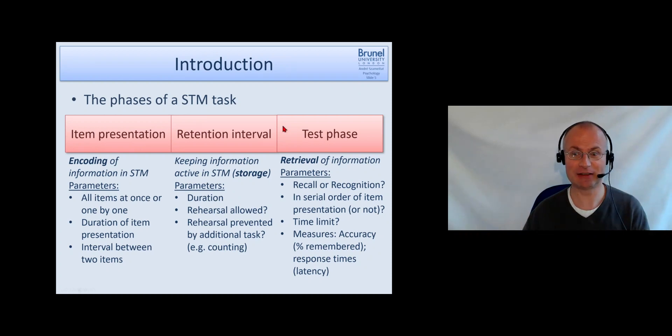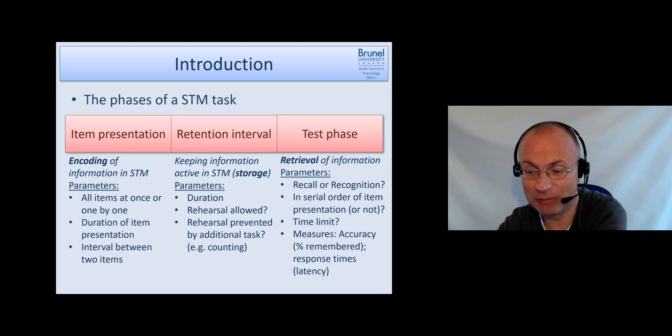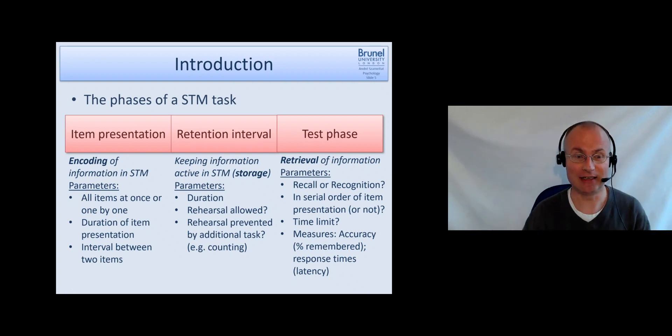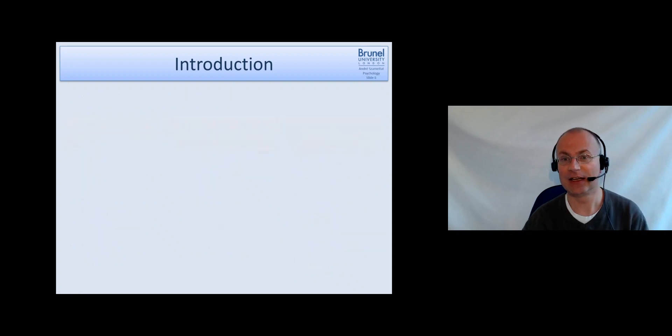Okay, so just to recap: we have three phases in a memory task which nicely link to the three components of memory system, or three functions of memory system. We have to encode, we have to store, and then we have to retrieve to get it out of memory again.